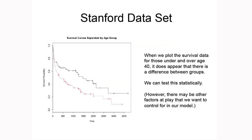Let's revisit the example from the last tutorial where we were comparing the survival curves for those under and over age 40. Just by looking at the survival curves between the two groups it appears that there's a difference, with those over 40 having shorter survival than those under 40. But we can statistically test if there is a significant difference in survival for the two age groups with the log rank test.